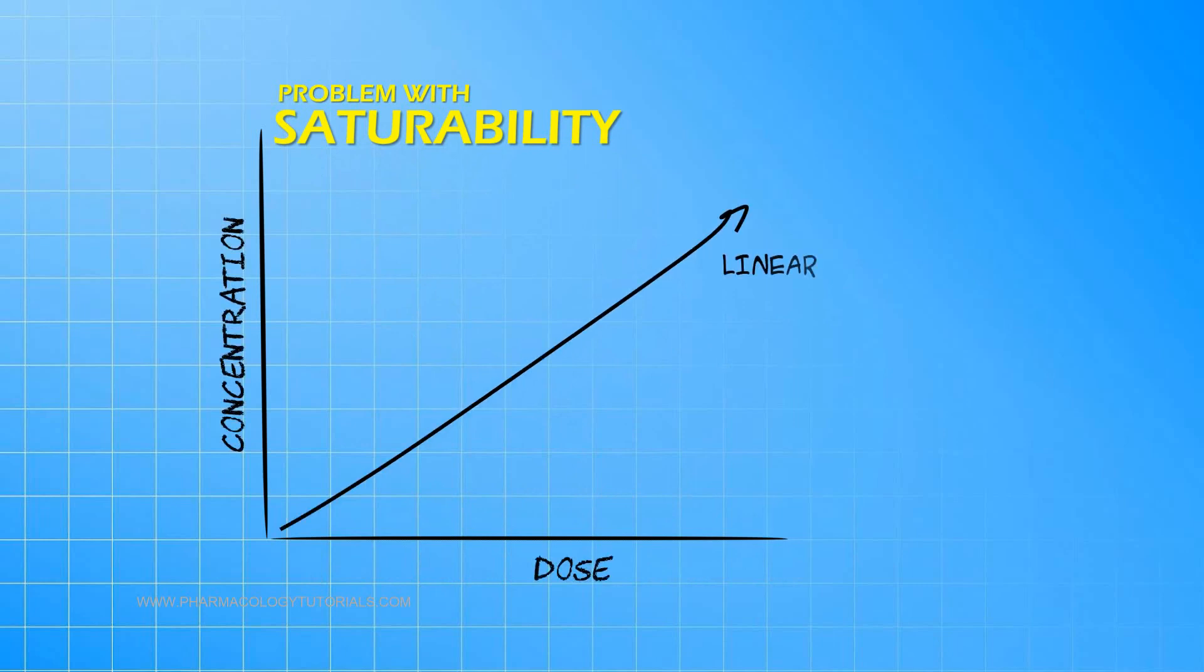In a linear system, there is a constant and direct relationship between dose and steady-state concentrations of a drug. But, with the saturation of the drug metabolism enzymes, drug concentrations rise disproportionately with any increase in dose. Let me explain.